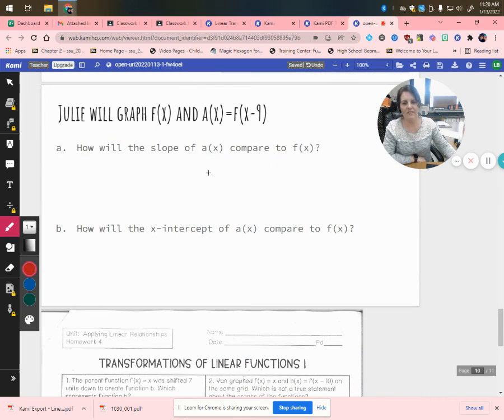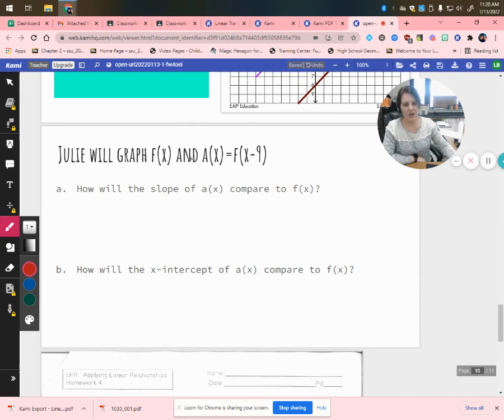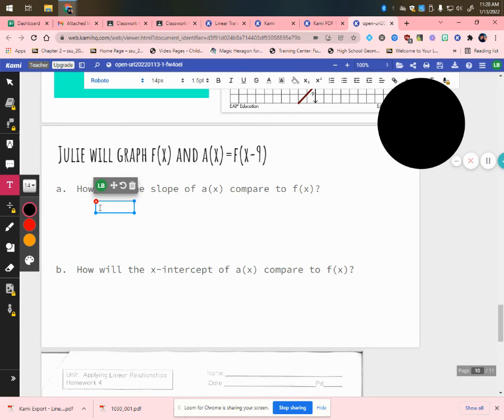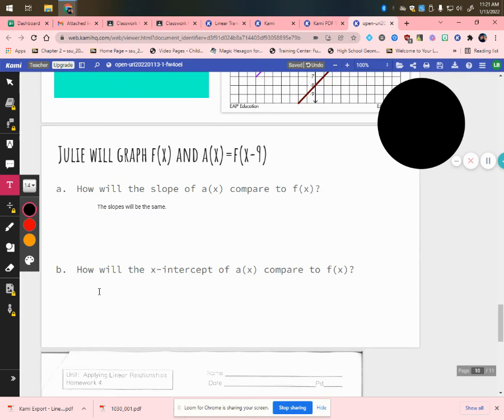So Julie will graph f(x) and a(x). And her a(x) is equal to f(x) minus 9. How will the slope of a(x) compare to that of f(x)? Well, we know that with the slope, the slopes will be the same. The slope doesn't change.